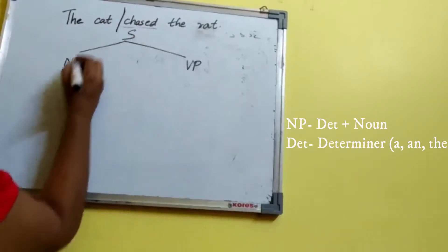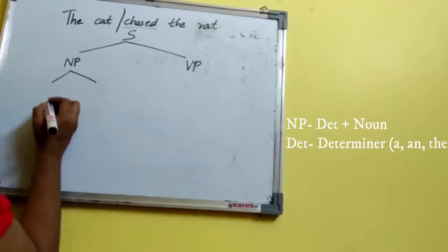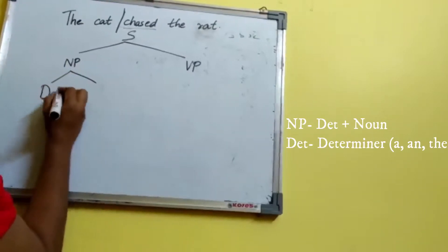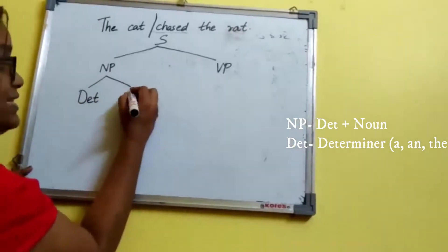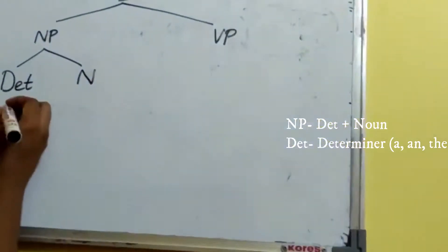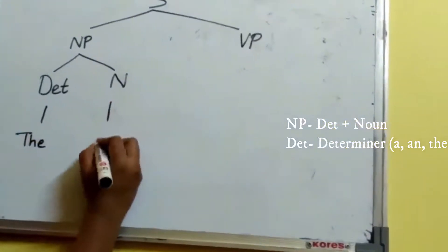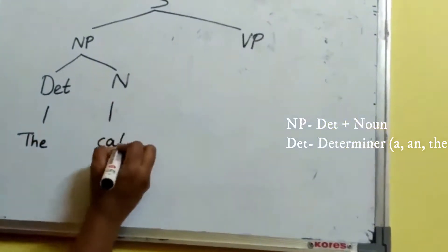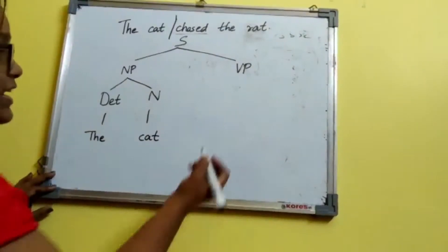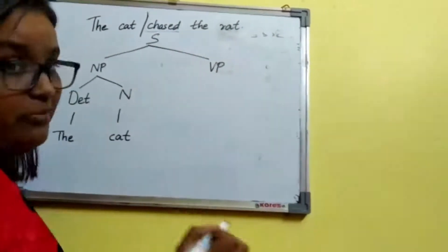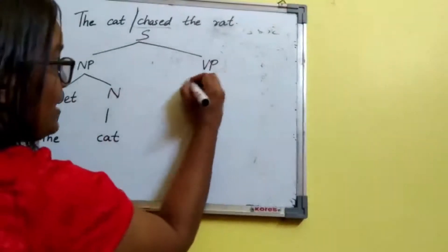Let's split 'the cat' now. 'The' is a determiner and 'cat' is a noun. So NP splits into determiner 'the' and noun 'cat'. Now let's look at the verb phrase: 'chased the rat'.